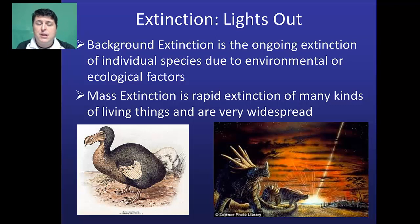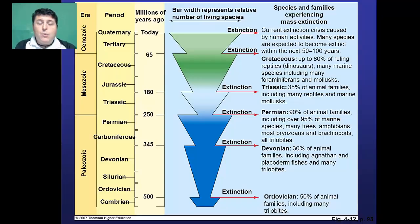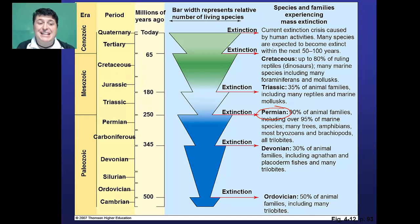There are different types of extinction. Background extinction is occurring all the time — organisms are slowly going extinct as a result of changes in the environment or ecological factors. Then sometimes we'll have mass extinctions: rapid extinction of many organisms as a result of a catastrophic event. We've had several major extinction events. Probably the largest is the one at the end of the Permian period, where over 90% of animal families, including 95% of marine species, went extinct.